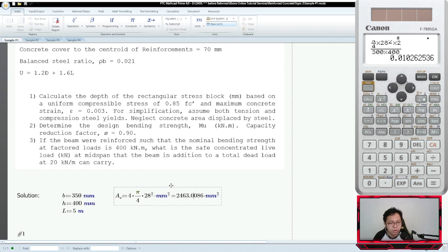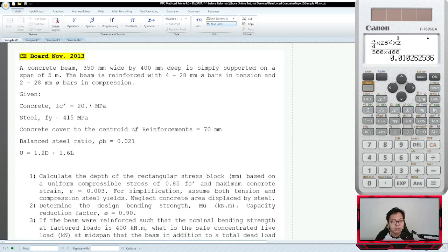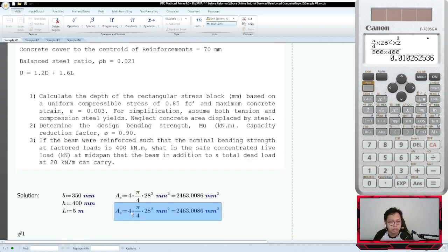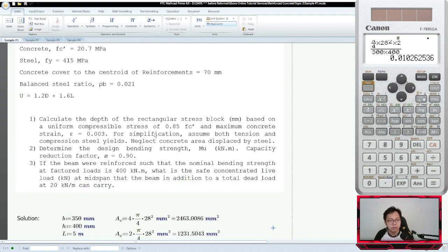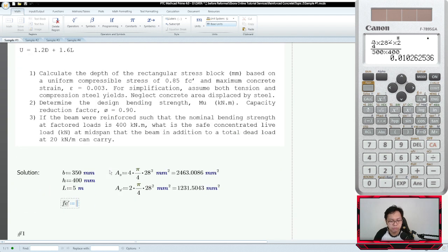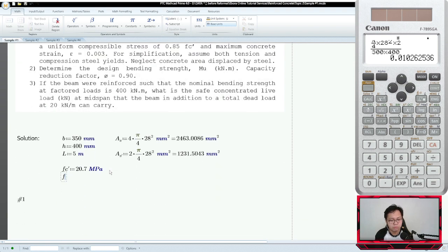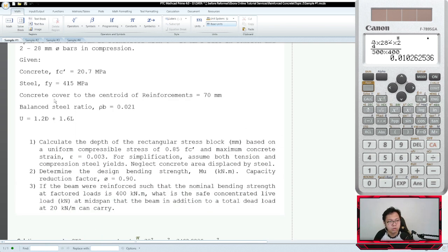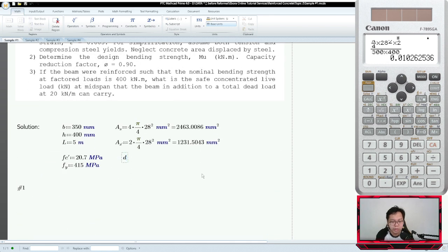Four 28mm diameter bars. So let's write the total AS as 4 times pi over 4 times 28 square. So AS is 2463 mm square. While the compression area AS prime, since there are two 28mm bars, AS prime is half of that.